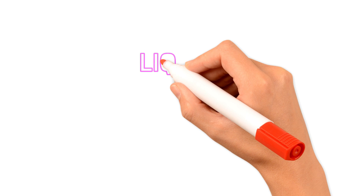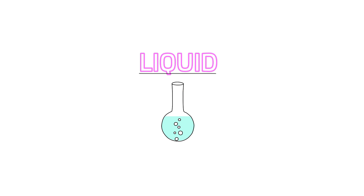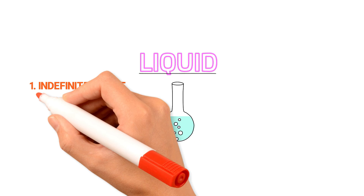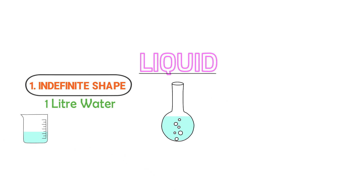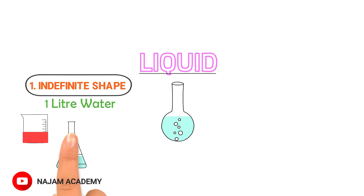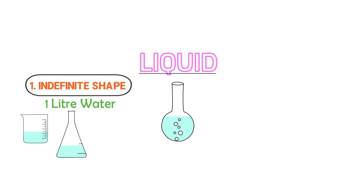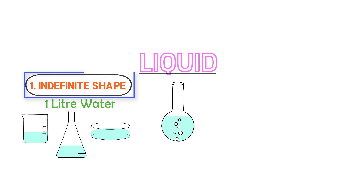Now let me teach you the second state of matter: liquid. Usually, liquids are flowing — for example, water, milk, and honey. The first property of liquid is that they have indefinite shape. Let's consider one liter of water in a beaker — the shape of the water fits this rectangular object. Now, if I put this water in a flask, its shape will be like a trapezium. Similarly, if I put this water in a flat object, its shape will be like a sphere or circular. Thus, from this example, we learn that the shape of liquid is changing, so we say that liquid has indefinite shape.